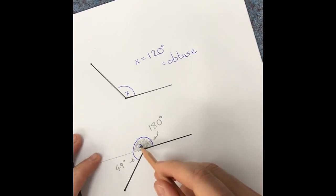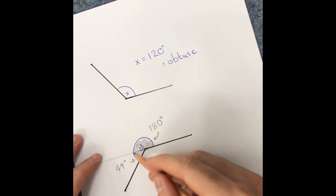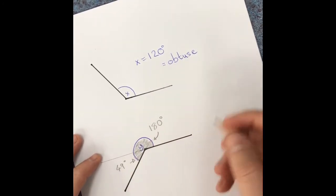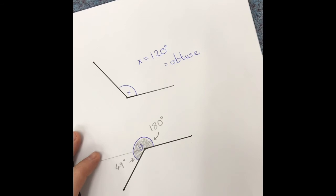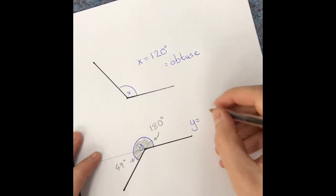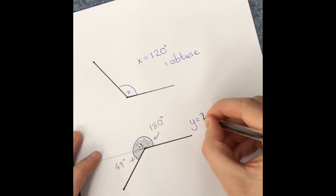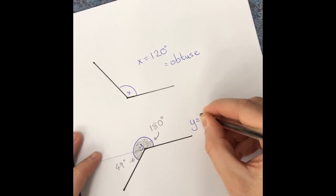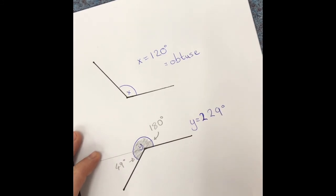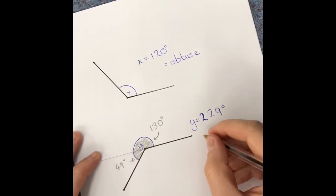Alright, so Y, this whole part here, will be 180 plus 49 degrees, which would make it 229 degrees. And that of course is a reflex angle.